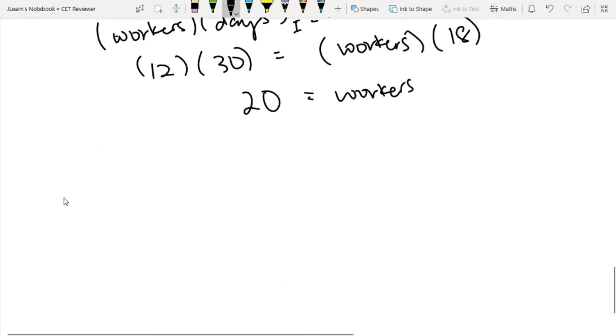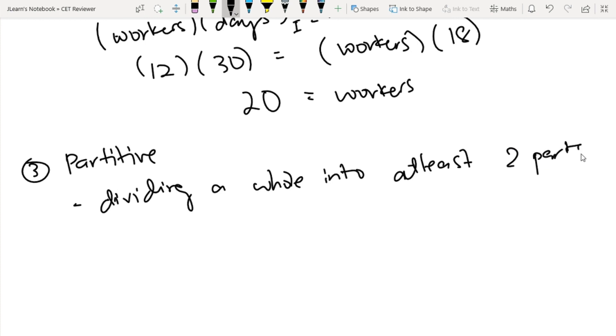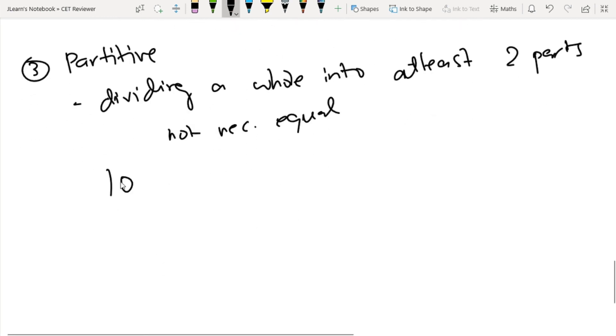Last kind of proportion is the partitive proportion. So basically, this is dividing a whole into at least two parts. This is not necessarily equal. For example, you and your friends won, let's say, 1 million pesos. And then you said, let's divide it into 2 is to 3 is to 5.